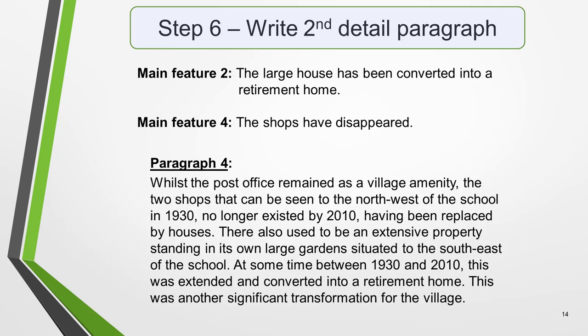For the fourth and final paragraph, you do the same thing for your remaining key features. Here are the two we have left: main feature 2, the large house has been converted into a retirement home, and main feature 4, the shops have disappeared. Here's an example: 'Whilst the post office remained as a village amenity, the two shops that can be seen to the north-west of the school in 1930 no longer existed by 2010, having been replaced by houses. There also used to be an extensive property standing in its own large gardens, situated to the south-east of the school. At some time between 1930 and 2010, this was extended and converted into a retirement home. This was another significant transformation for the village.'